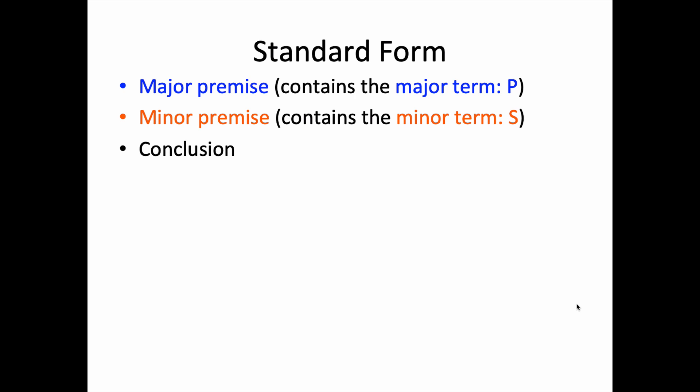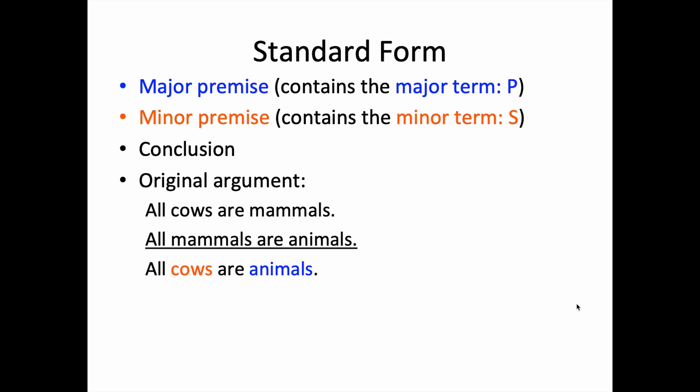So let's look at the original argument: all cows are mammals, all mammals are animals, so all cows are animals. We can reorganize the argument so that it reflects standard form for the categorical syllogism. So we've got the elements in order in terms of a sequence one on top of the other, but for standard form, we want to make sure that the premise that contains the major term is first, the premise that contains the minor term is second, and then we have the conclusion.